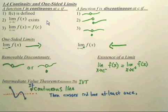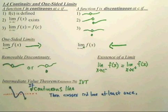How do you define continuity formally? A function is continuous at a point if: it is defined there, it has a limit at that point, and the limit equals the actual function value. This can be confusing, but those are the three conditions for continuity.